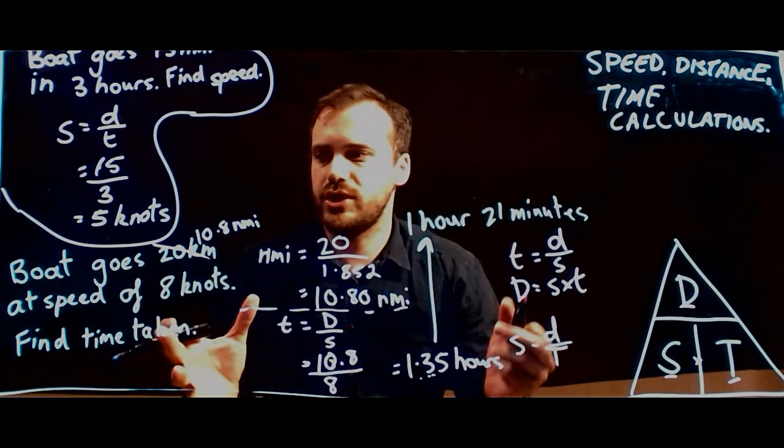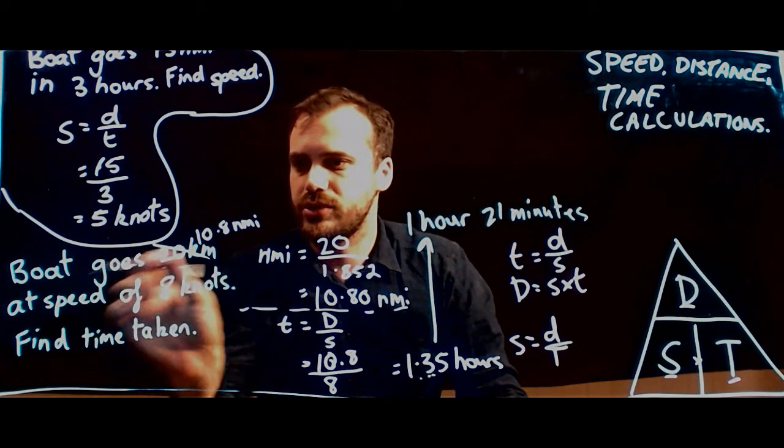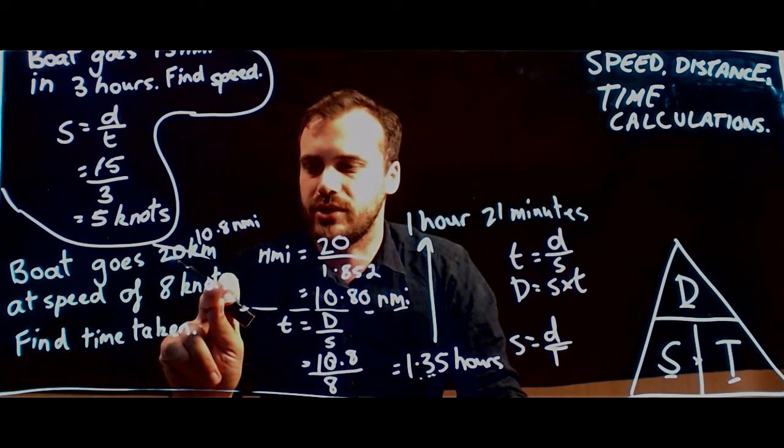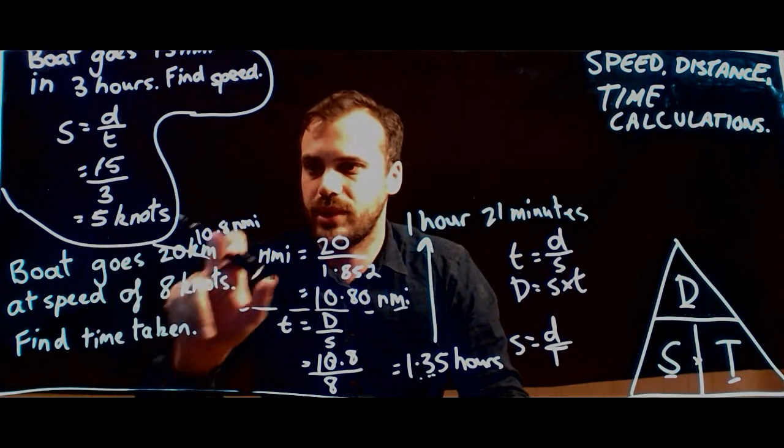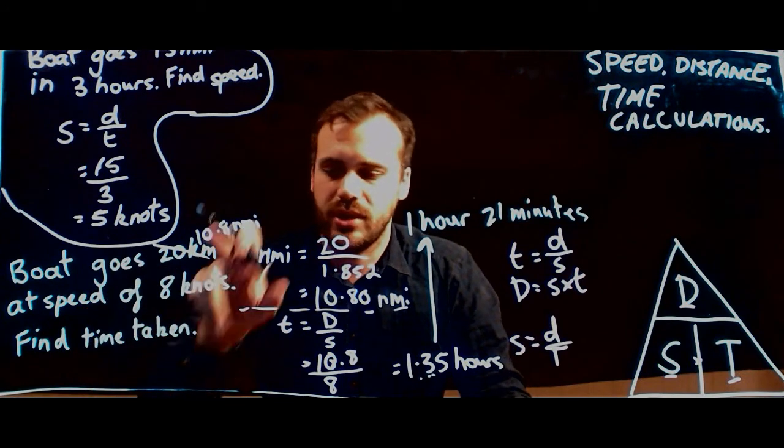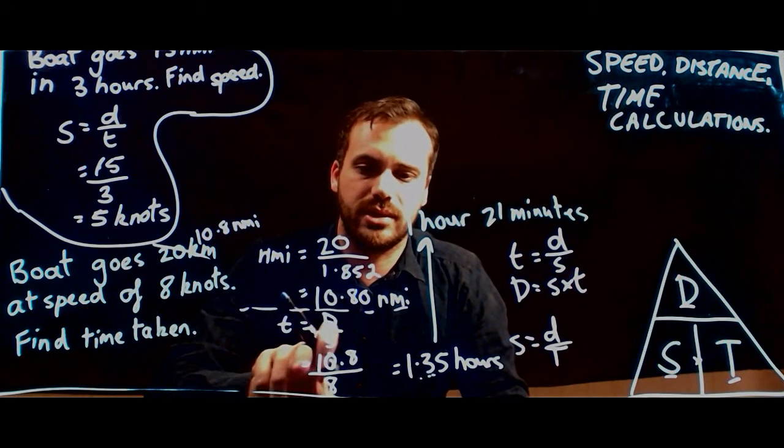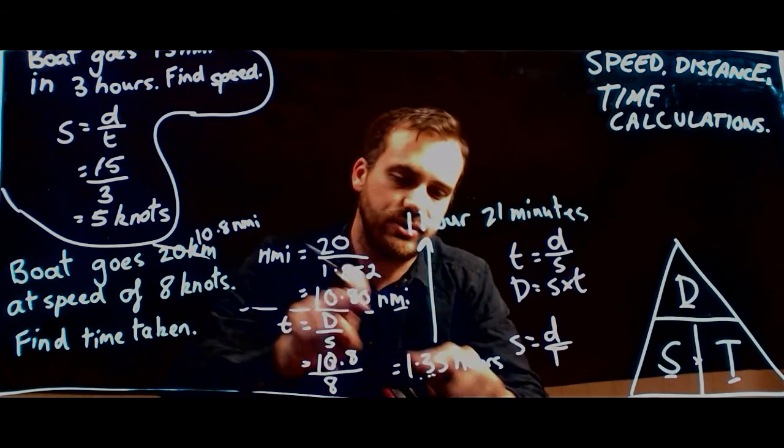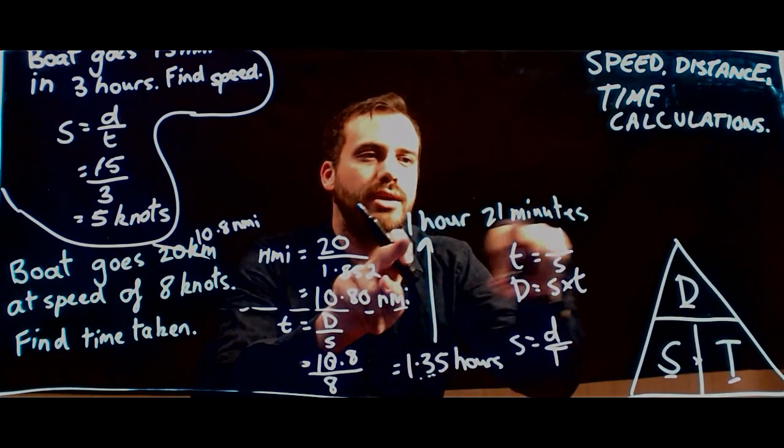Okay, so if we finish up there, we can see that if a boat goes 20 kilometers of speed of 8 knots, it's really going 10.8 nautical miles at 8 knots. Time equals distance over speed. 10.8 over 8 gives us 1.35 hours, 1 hour and 21 minutes.